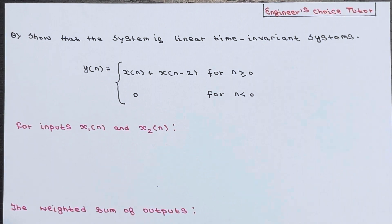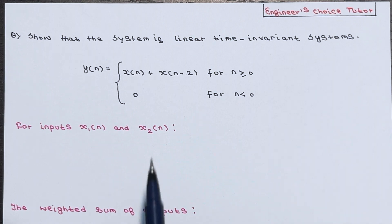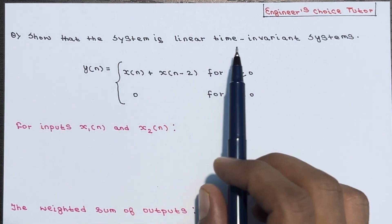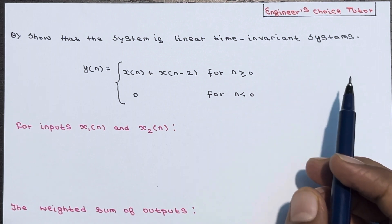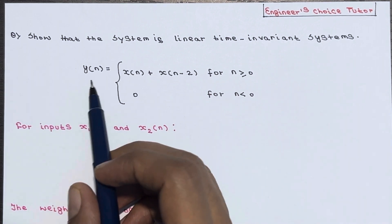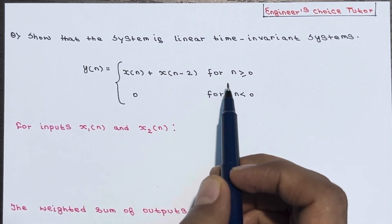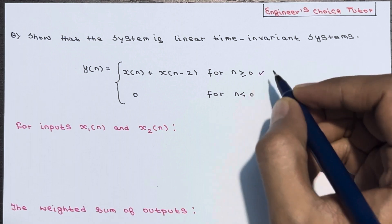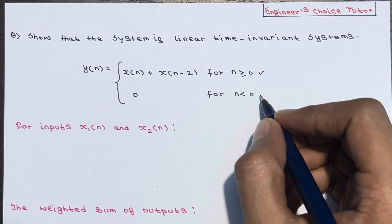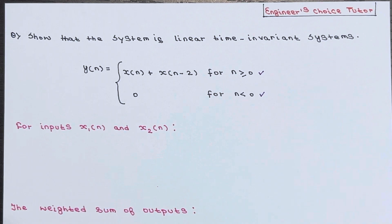Hi everyone, in this lecture we will discuss one numerical based on linear time invariant systems. The system equation is given as y(n) = x(n) + x(n-2) for n ≥ 0, and 0 for n < 0. Now let's check whether this system is linear or not.